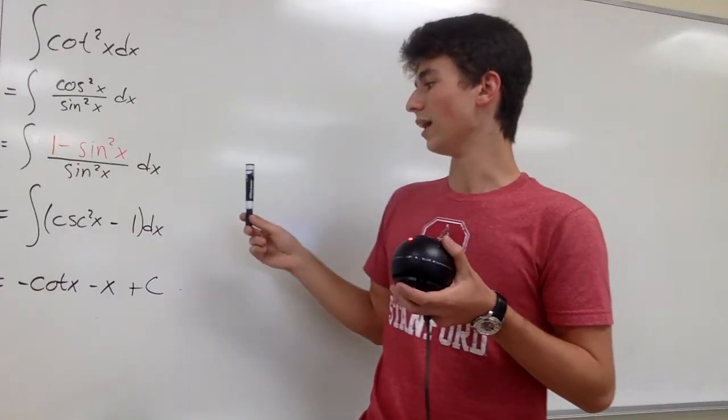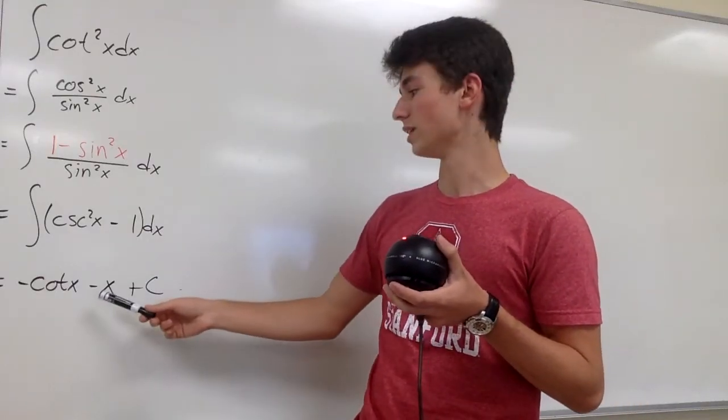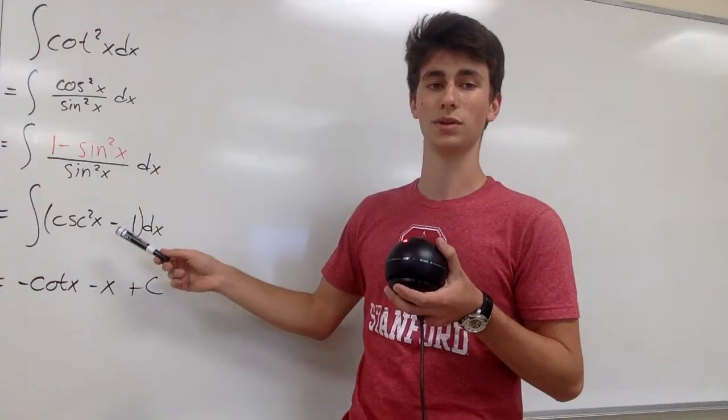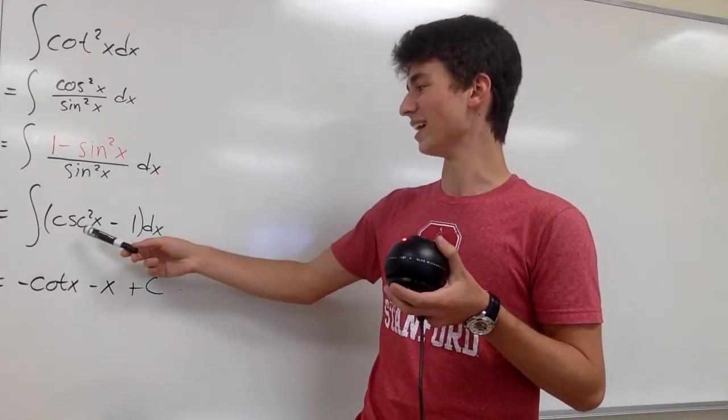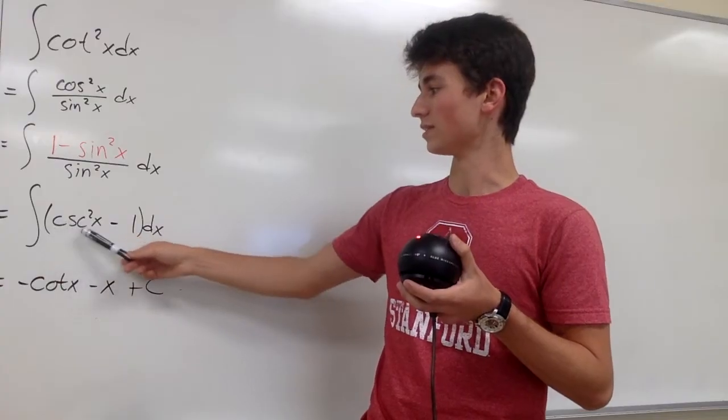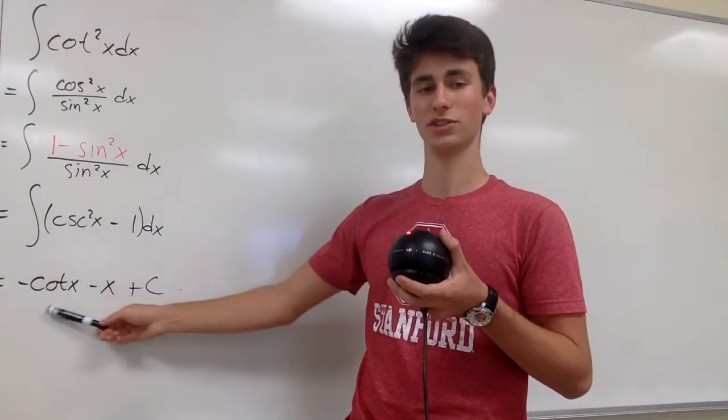And we know that the derivative of cotangent of x is negative cosecant squared of x, and so we can see that the integral of cosecant squared of x must be negative cotangent of x.